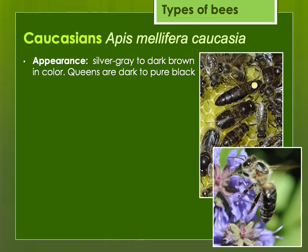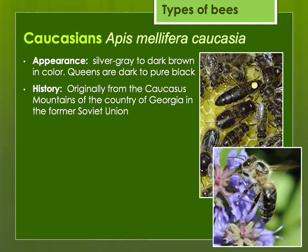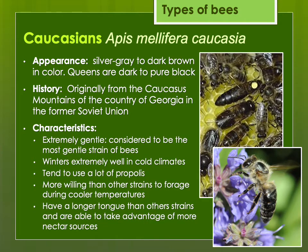The Caucasians are dark bees as well, originally from the Caucasus mountains in the Republic of Georgia in the former Soviet Union. They're extremely gentle — the most gentle strain of bees there are. They winter well. They do tend to use more propolis than other strains, and they seem more willing to forage during cooler temperatures as a result of originally coming from high mountain areas. They have a longer tongue than some other strains and may be able to take advantage of more diverse nectar resources.